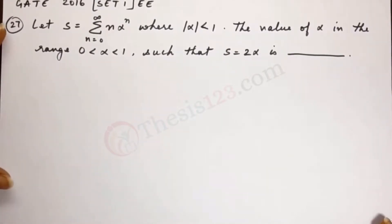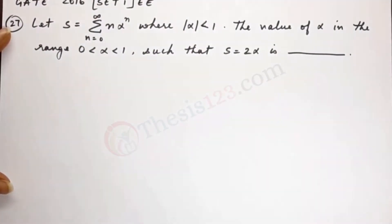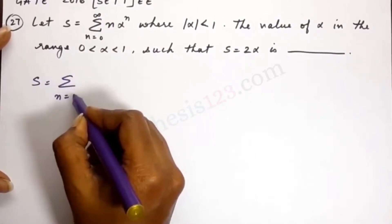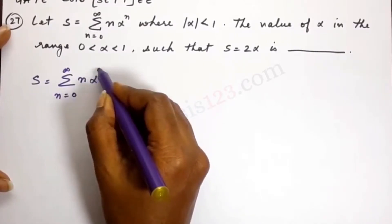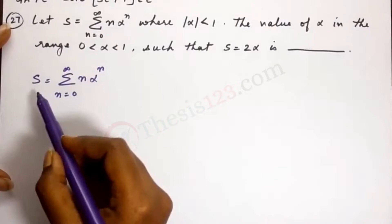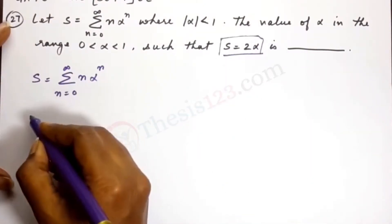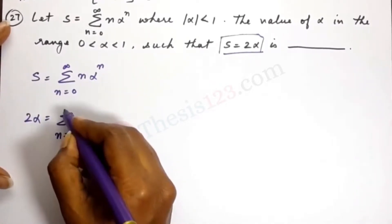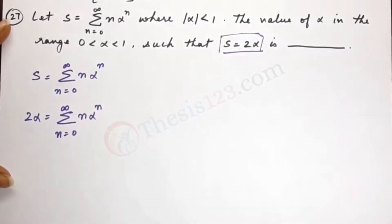Basically, we need to find the value of alpha. We have S equal to the summation from n equals 0 to infinity of n times alpha to the power n. It is given that S equals 2 alpha, so let's substitute that: 2 alpha equals the summation from n equals 0 to infinity of n times alpha to the power n.